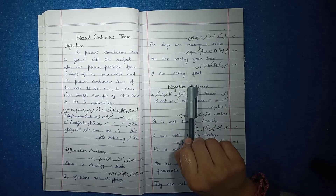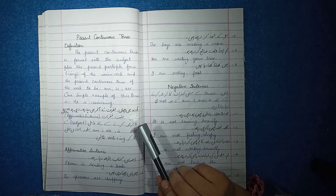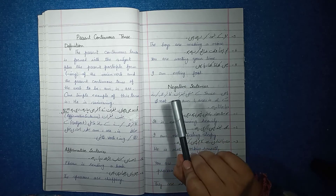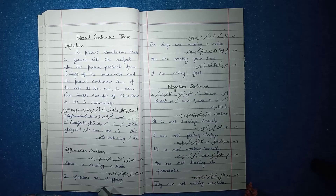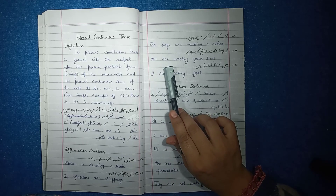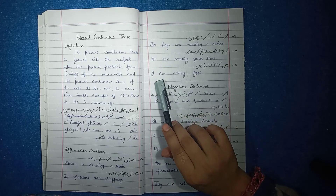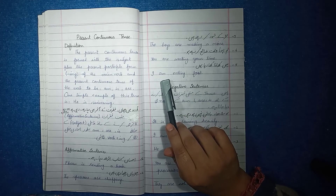The most important thing is knowing when to use is, am, or are. If the subject is singular, use 'is.' If the subject is plural or a noun referring to multiple people, use 'are.' 'They' and 'you' also take 'are.' For the subject 'I,' the helping verb is 'am.'